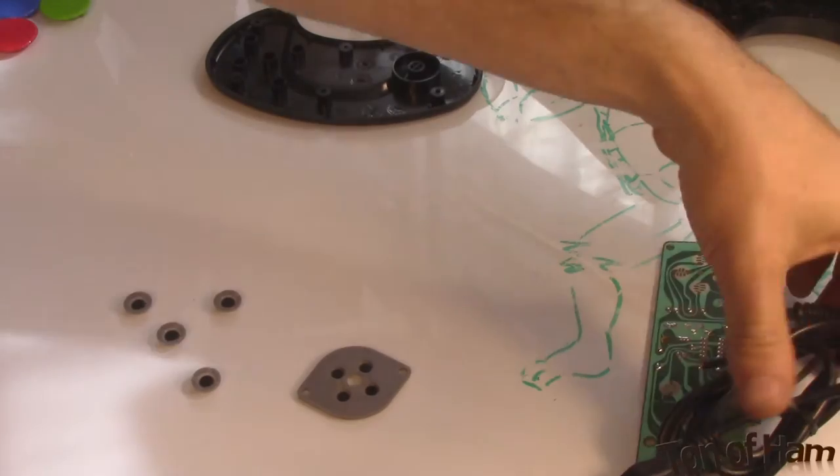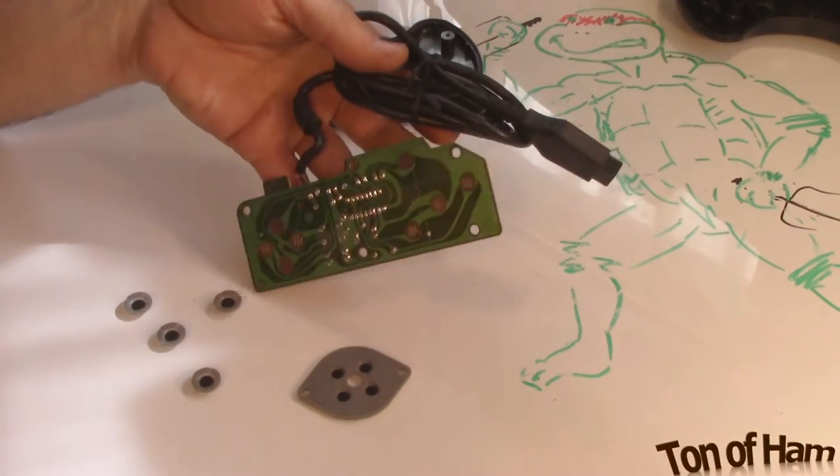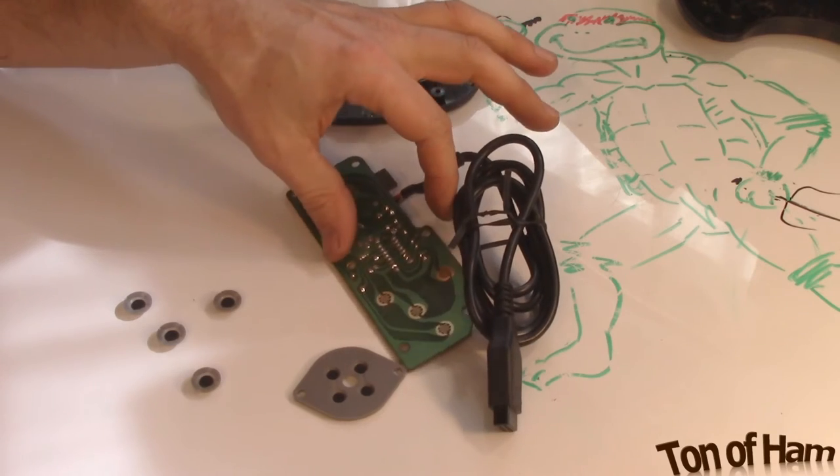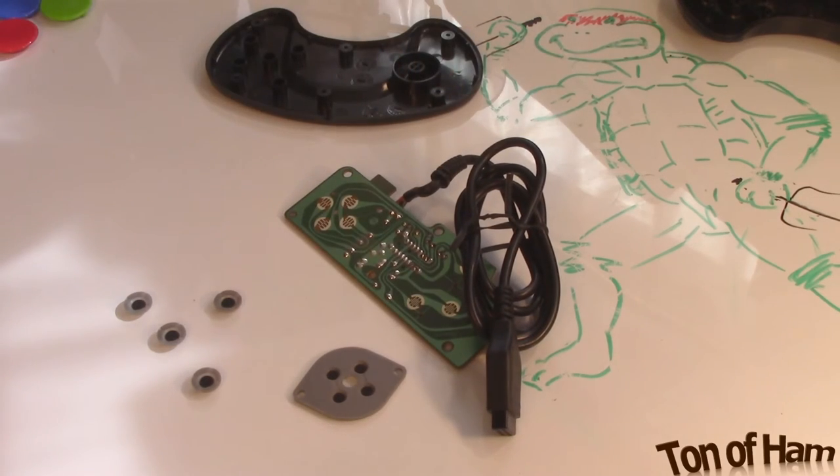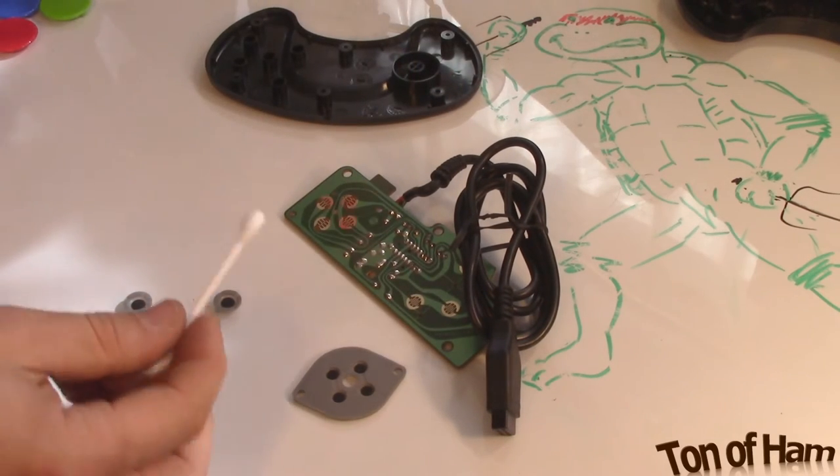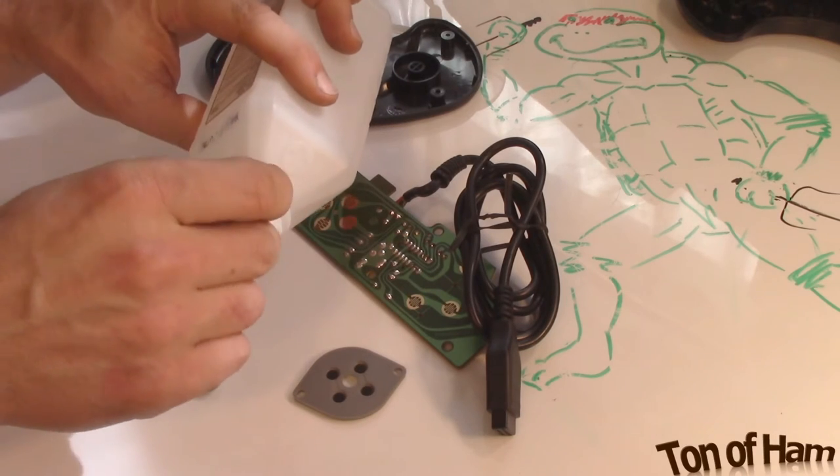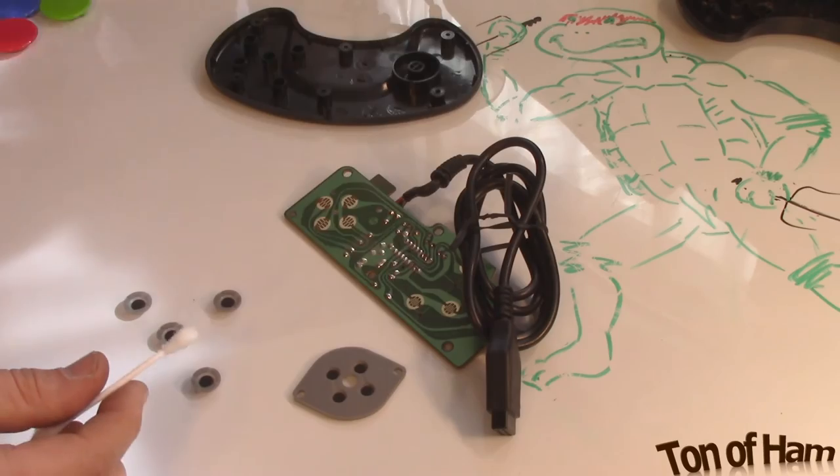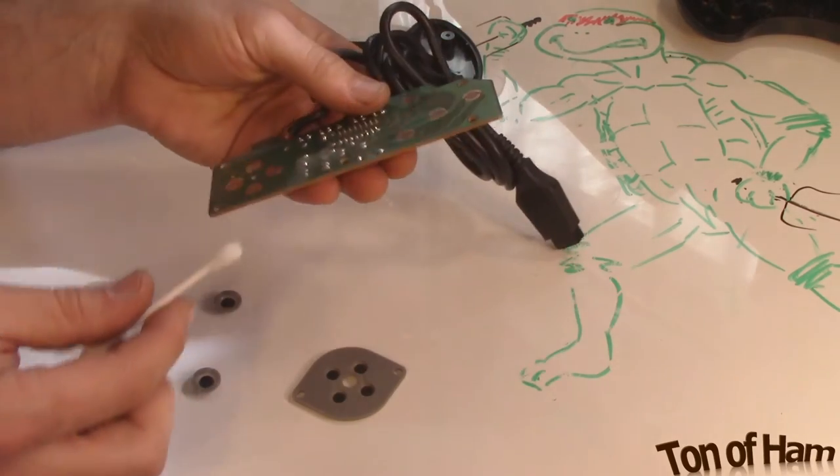Okay, once we've wiped all those pads down, we're going to focus on these conductive surfaces here. I'm going to take a clean Q-tip again, dip it in alcohol, same routine as last time. In the same sort of motion, I'm just going to go through and clean all these pads.